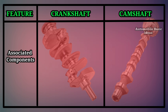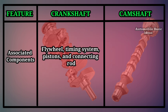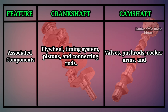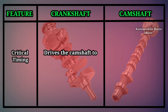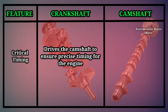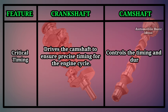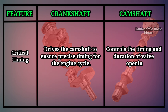Associated components: Crankshaft components include the flywheel, timing system, pistons, and connecting rods. Camshaft components include valves, push rods, rocker arms, and lifters. Critical timing: The crankshaft drives the camshaft to ensure precise timing for the engine cycle. The camshaft controls the timing and duration of valve opening and closing.